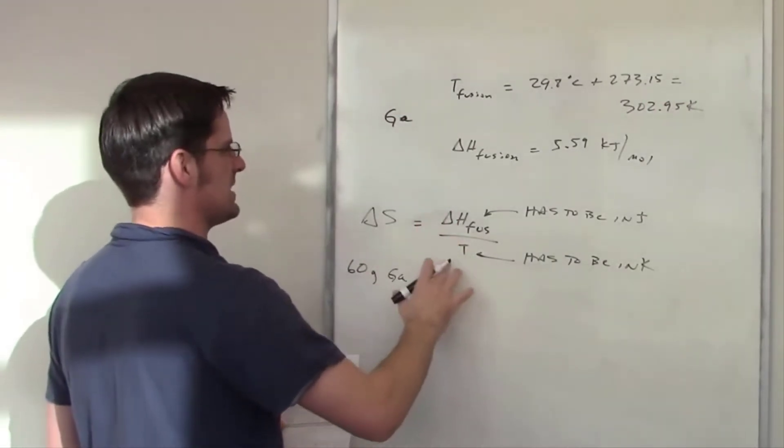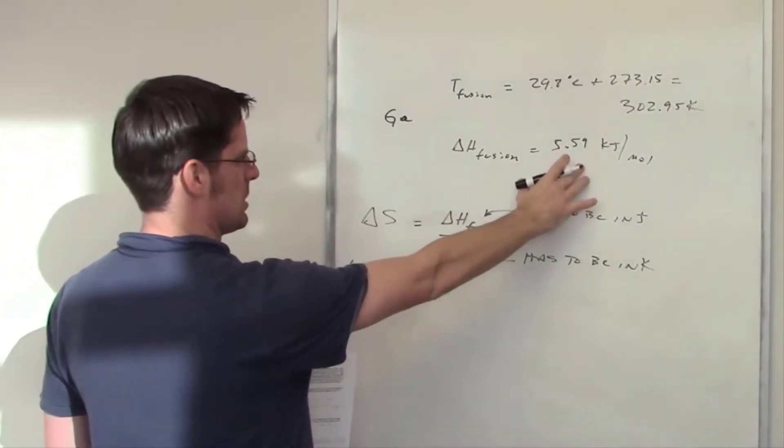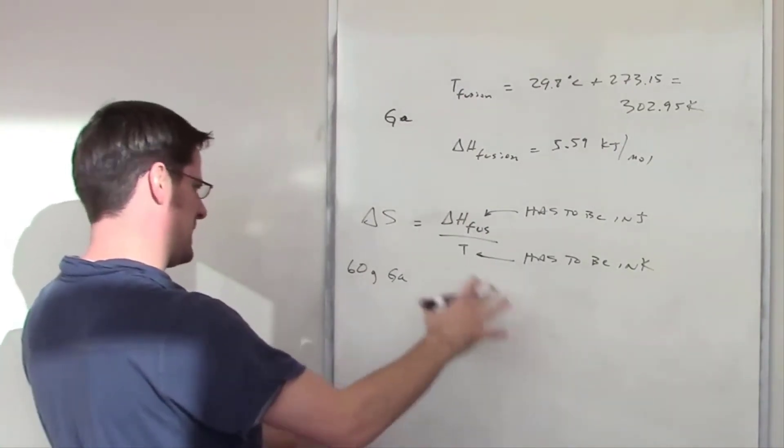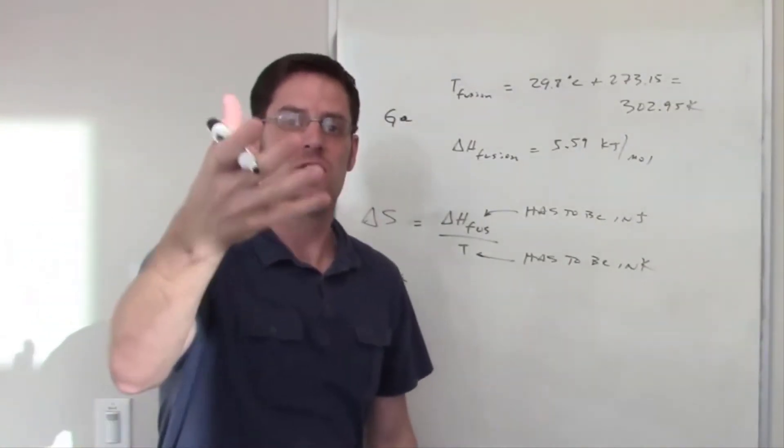Now I need to take this number and this amount, 60 grams, and somehow do something to it to get joules out.